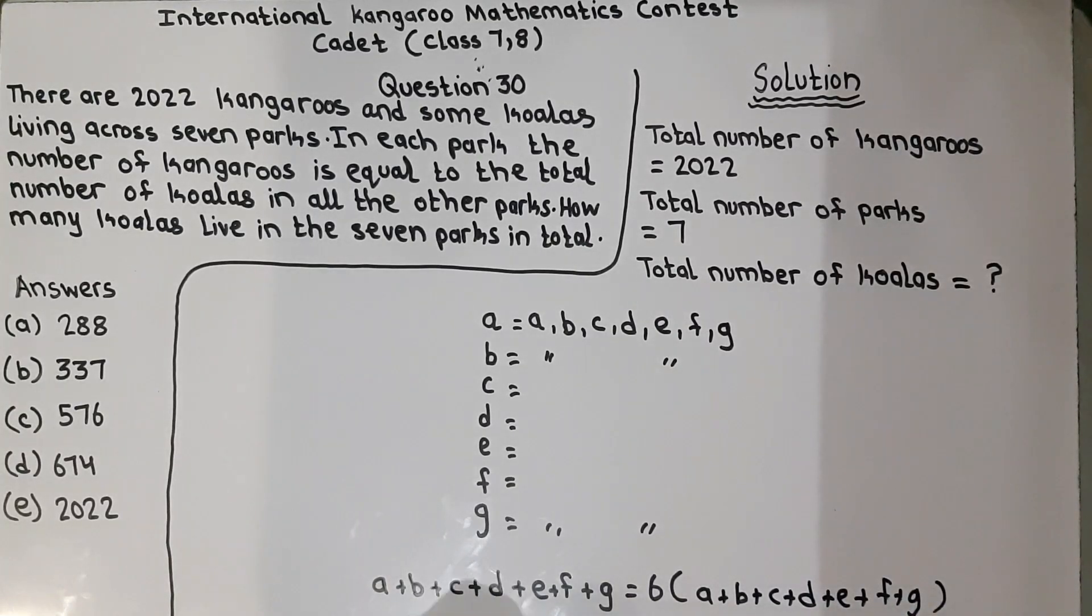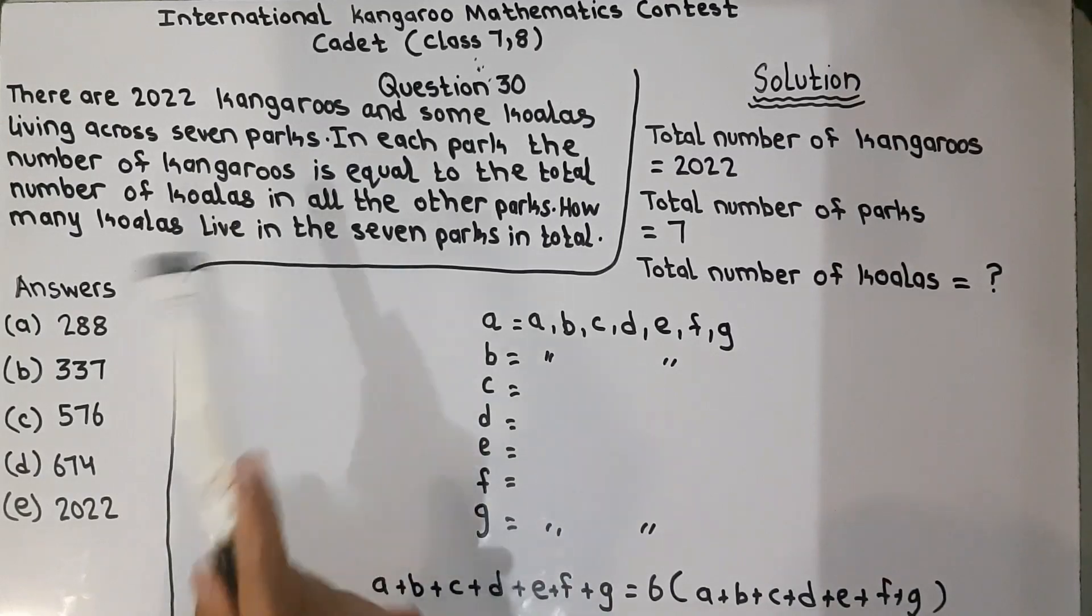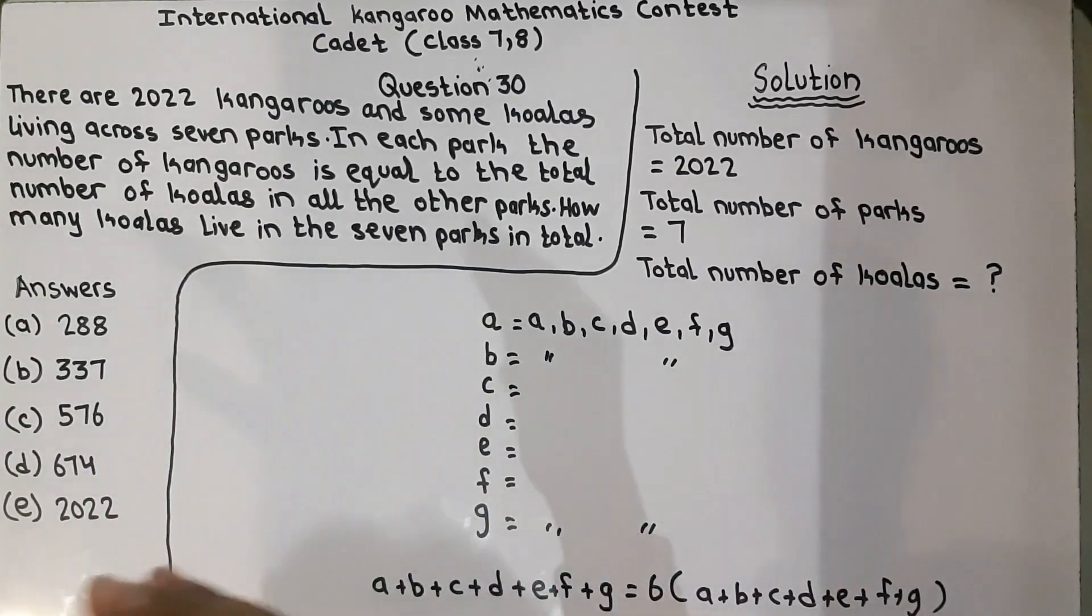Now, you guys must be thinking that why I have written 6 here. This is because in the question, it has said that in each park, the number of kangaroos is equal to the total number of koalas in all the other parks. He is talking about the other parks. So we will not count the park which they are talking about. The number of other parks is 6, so that's why we have written 6 here.